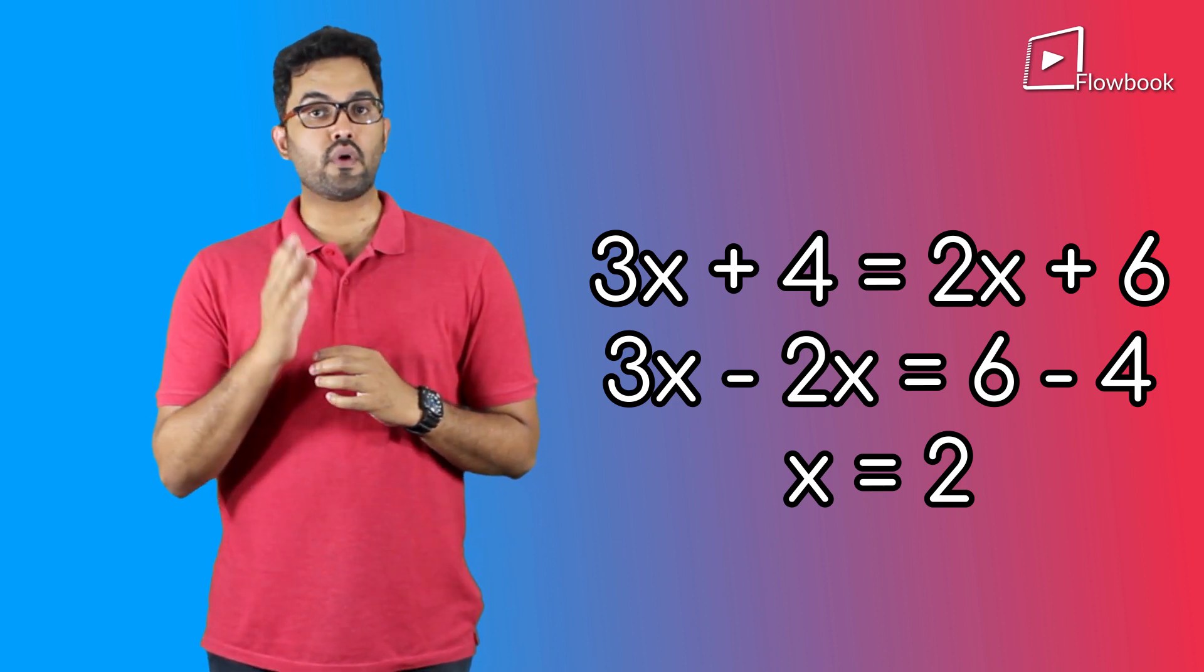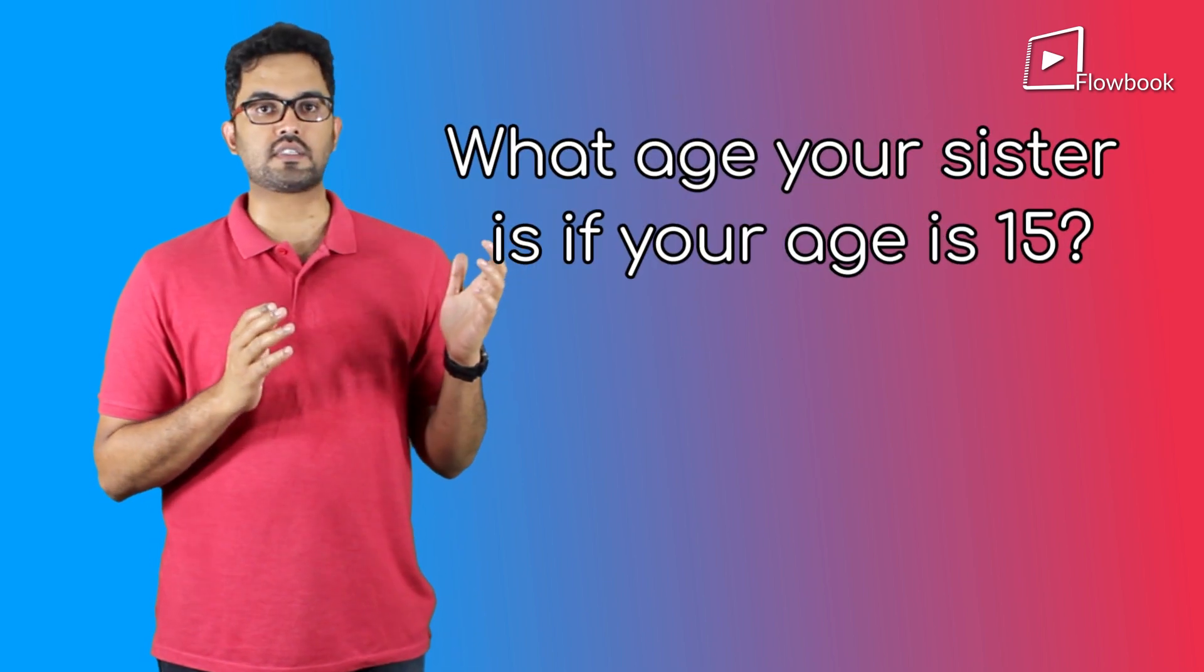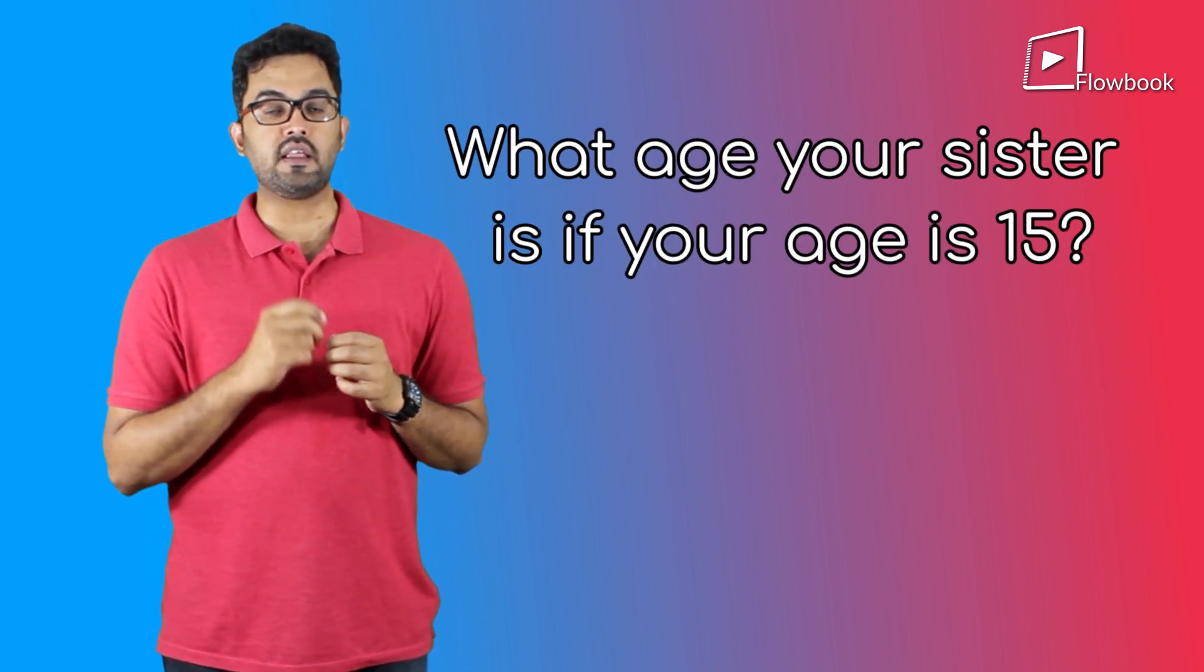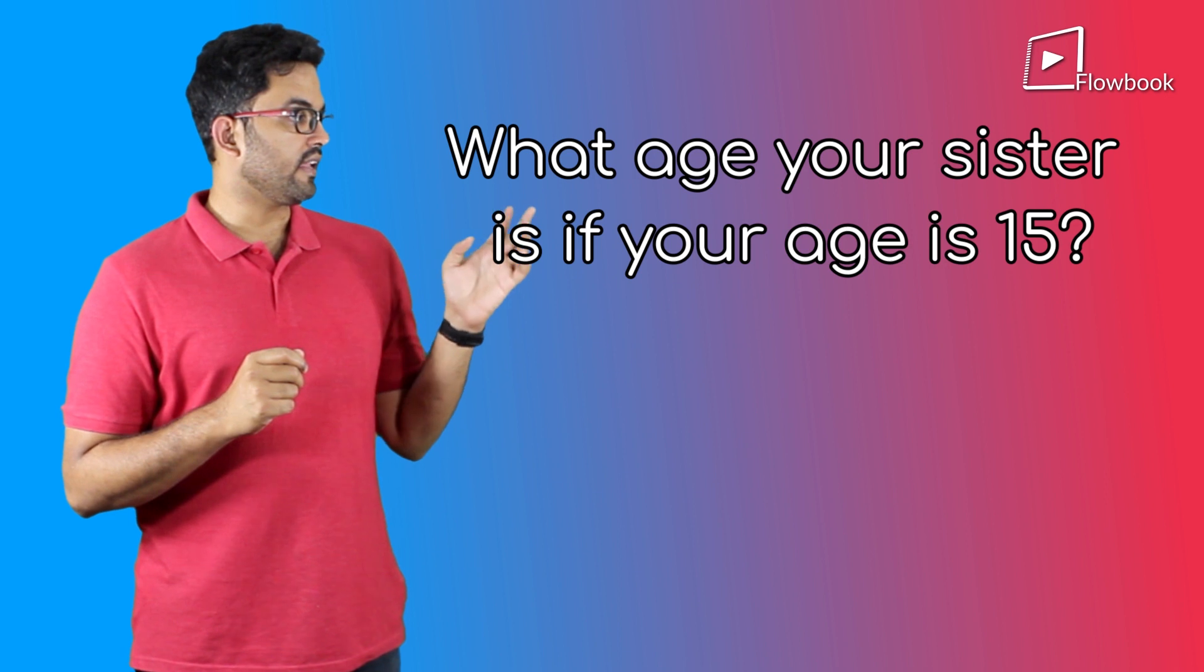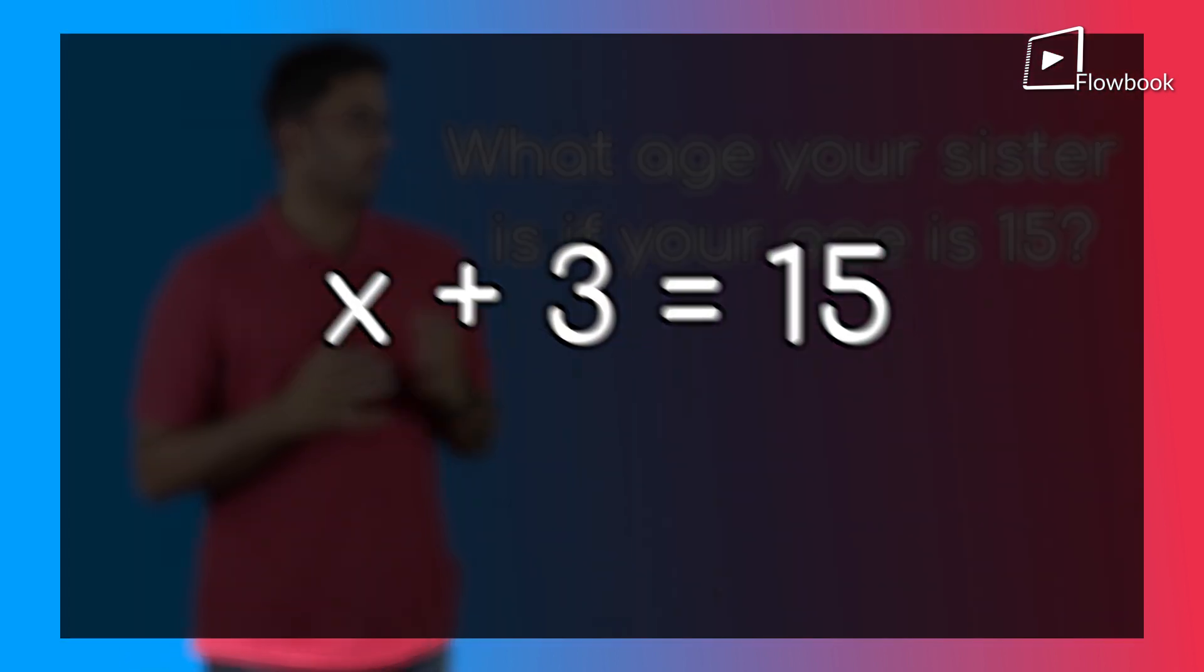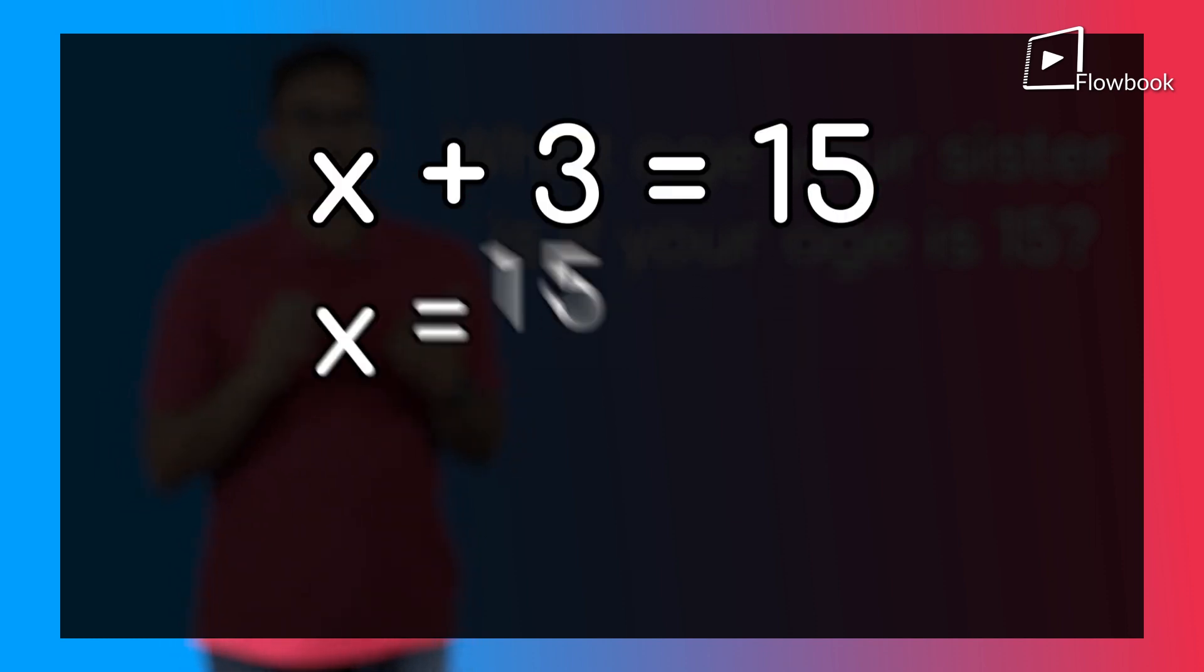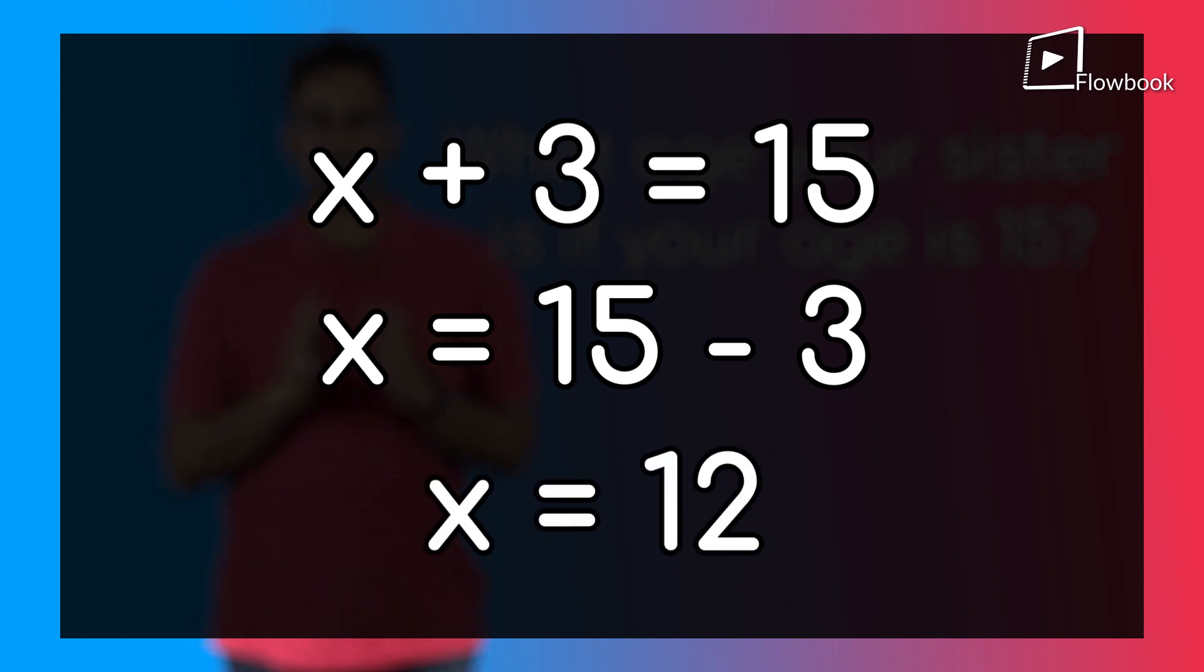For example, going back to the previous one, if I ask you what age your brother or sister is if your age is 15, then we can write the equation X plus 3 equal to 15. Here, X plus 3 is one algebraic expression and 15 is the other. Solving this, we can say that their age is 12. Obviously, not all problems are so simple, but this is just to give a basic idea about what actually is going on there.